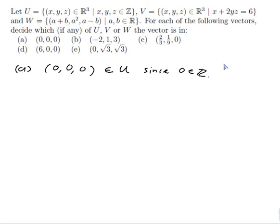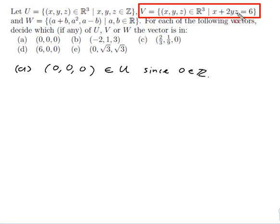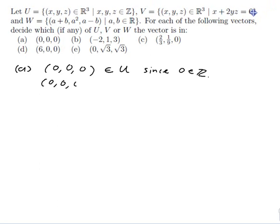Let's decide if it's in V. The way to tell if a point is in V is if it satisfies the equation. So we see 0 plus 2 times 0 times 0 is 0, and that's not equal to 6. So it can't be in V because (0, 0, 0) doesn't satisfy that equation. So (0, 0, 0) is not in V since 0 plus 2 times 0 times 0 is not equal to 6.